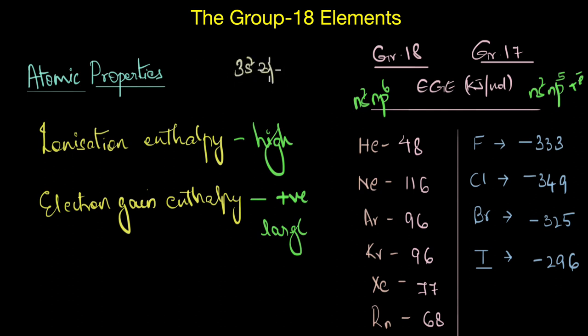For example, if you look at argon, the outer electronic configuration is 3s2 3p6. And if you add an extra electron, what would be the new electronic configuration? It would be 3s2 3p6 and 4s1. This is the electronic configuration of potassium, which as we know is a highly reactive alkali metal. This is why in the case of Group-18 elements, to add an electron, energy is not released but rather consumed.